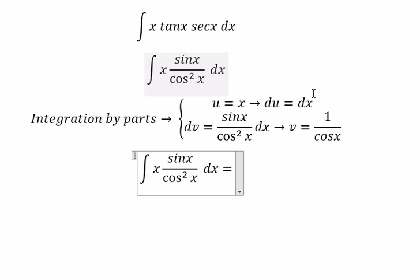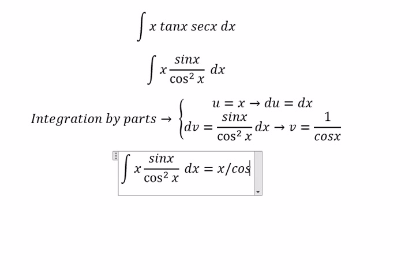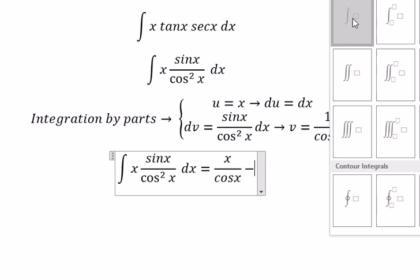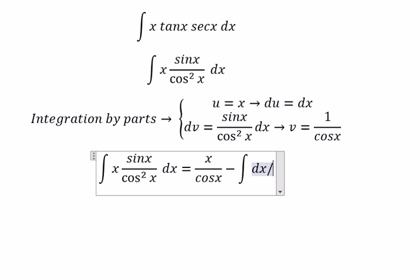get u multiplied with v minus the integral of dx over cos x.